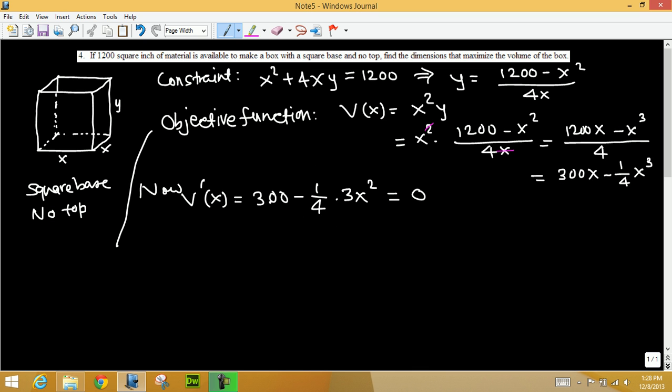Let's move 300 over, so negative 1/4 times 3x squared. We could have multiplied, that would be negative 3/4. Move 300 over, negative 300. Now that implies x squared equals, negative 3/4 on the left, we multiply by negative 4/3 on the right.